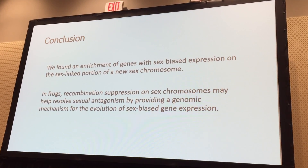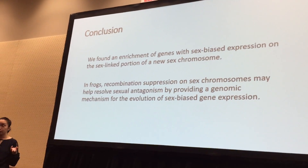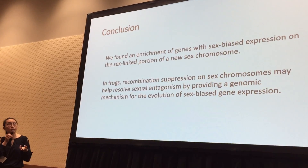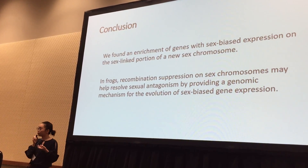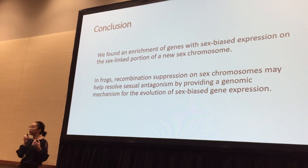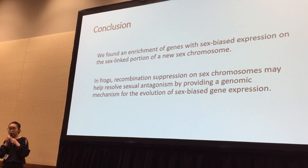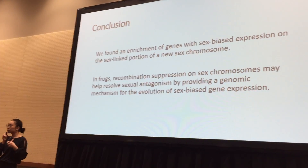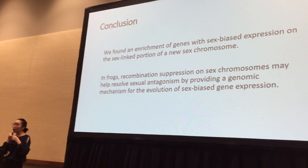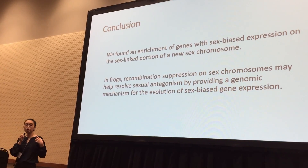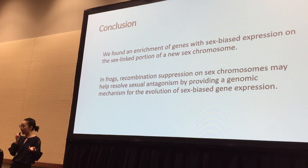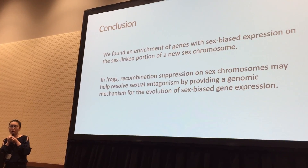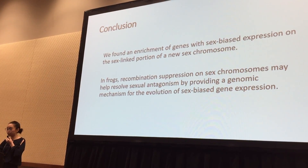Our results show an enrichment of genes with sex-biased expression on the sex-linked portion of the new sex chromosome. This suggests that in borealis, recombination suppression on the sex chromosome may help resolve sexual antagonism by providing a genomic mechanism for the evolution of sex-biased gene expression.